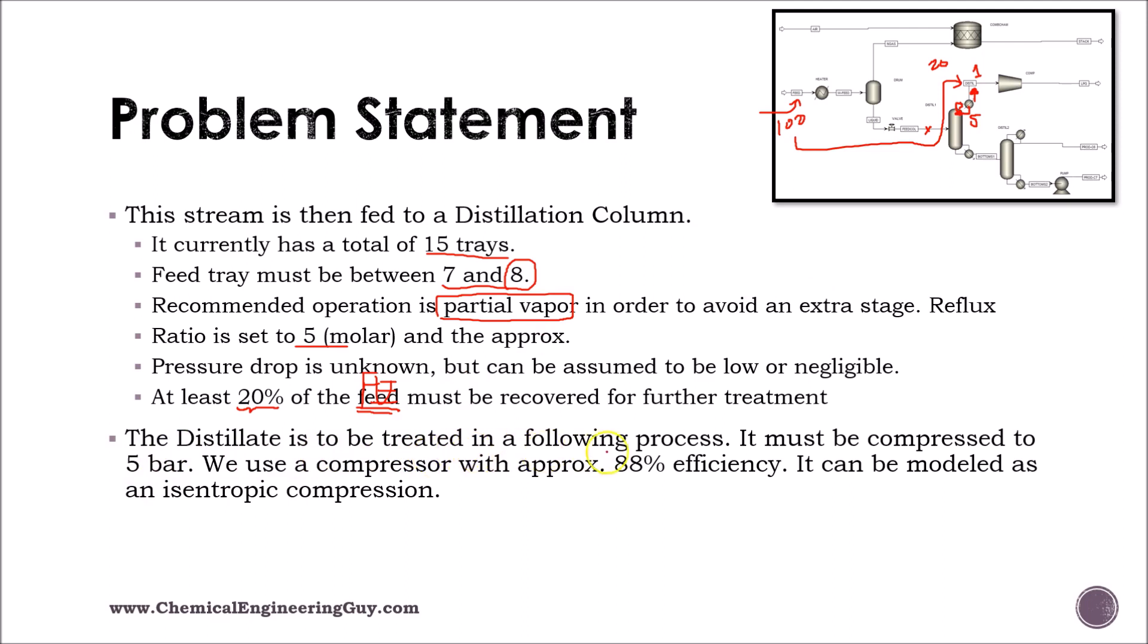The distillate is to be treated in a following process. It must be compressed to 5 bar pressure. So that's why we have this compressor. The compressor has 88% efficiency and it can be modeled as an isentropic compression.